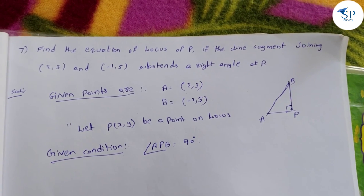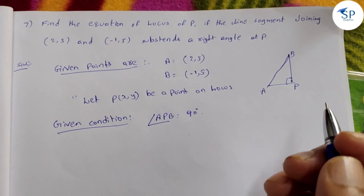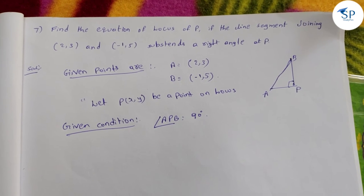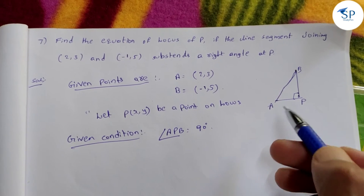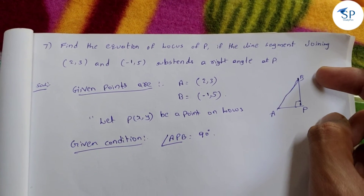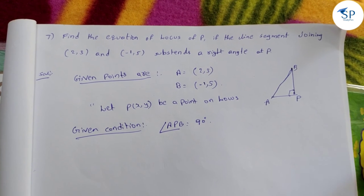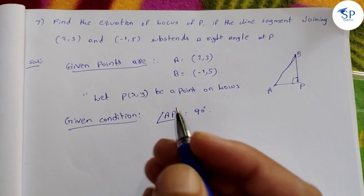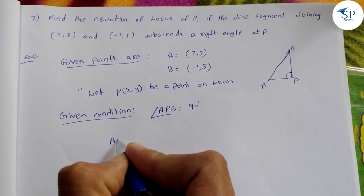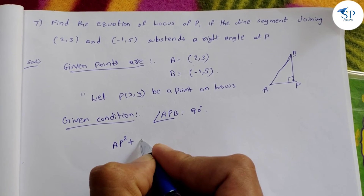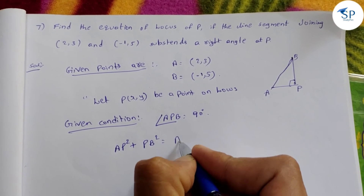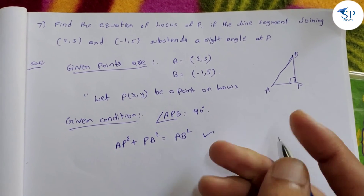Let me show you here. For a right angle triangle, side square plus side square is equal to hypotenuse square. Here the hypotenuse is AB, so we get AP² + BP² = AB². This is the hypotenuse condition.